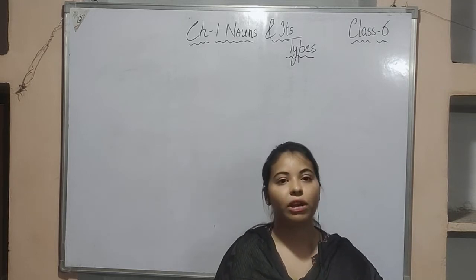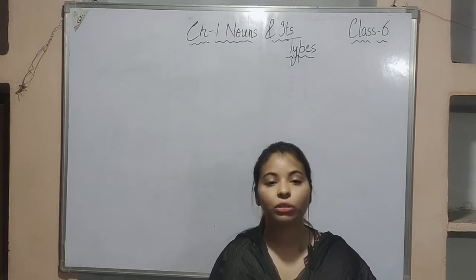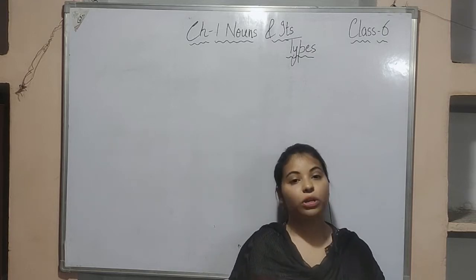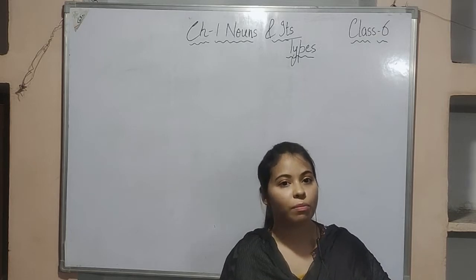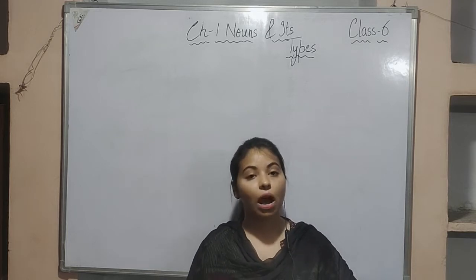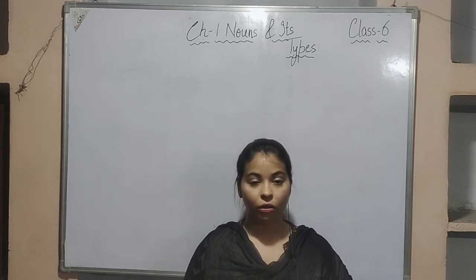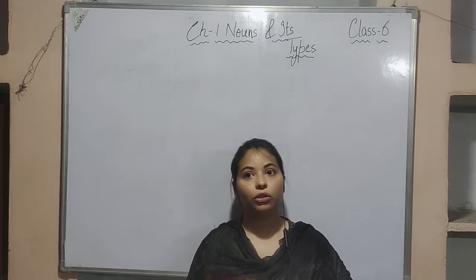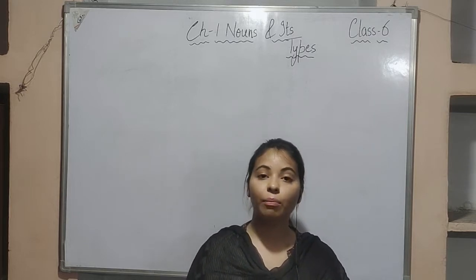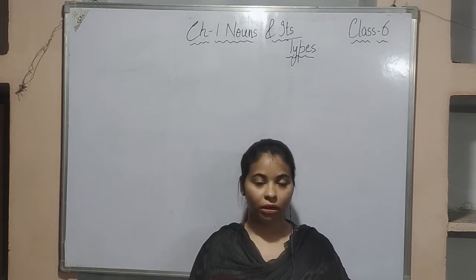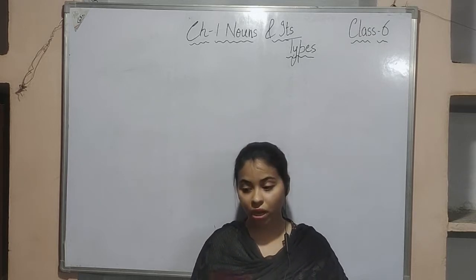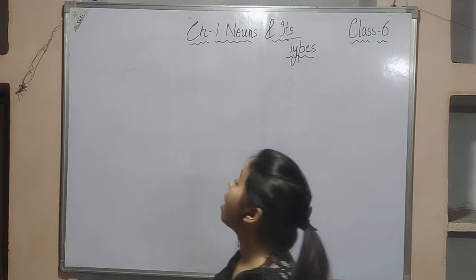I have explained various examples and I think you are able to recognize the difference between common, proper, abstract, and collective noun. Today in this video, I am going to teach you how to form abstract noun. Abstract nouns are those nouns which you cannot see, cannot touch — they are nouns which you can only feel. For example, if you hate any person, you can't see that hatred, so it is an abstract noun.